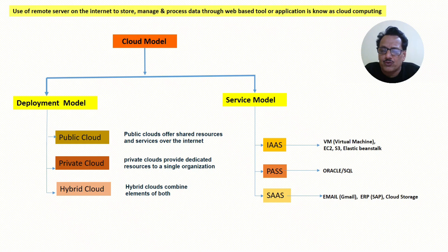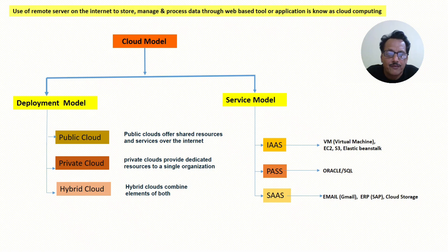And hybrid cloud — as the name suggests, it is a mixture of both. Now we will go to the service model. In the service model, there are three models: IaaS (Infrastructure as a Service), PaaS (Platform as a Service), and SaaS (Software as a Service).